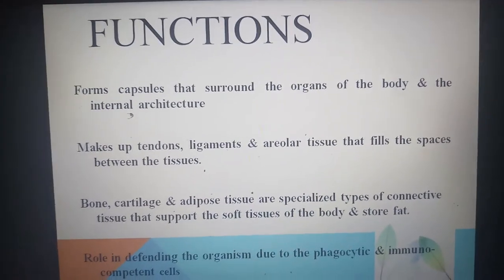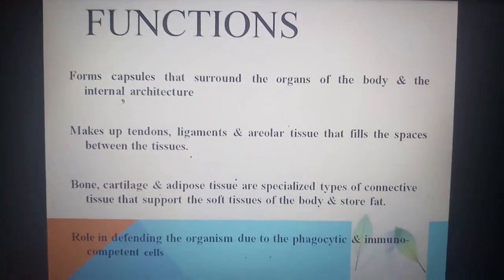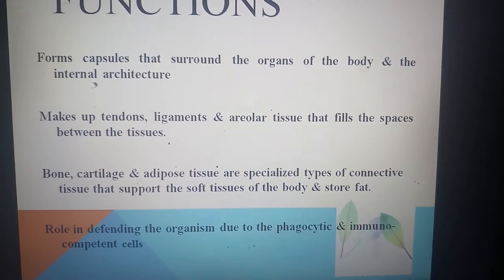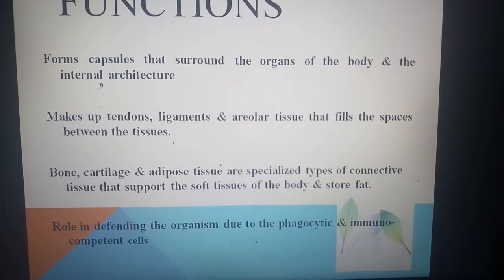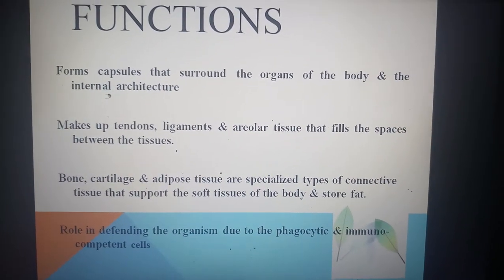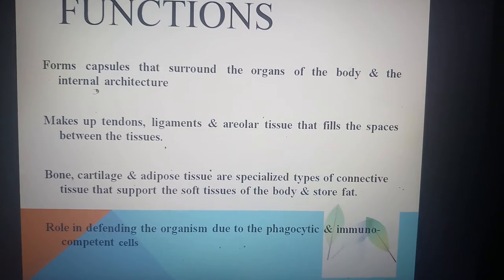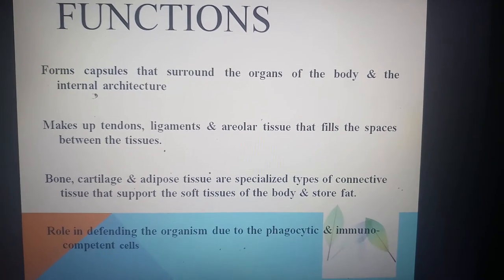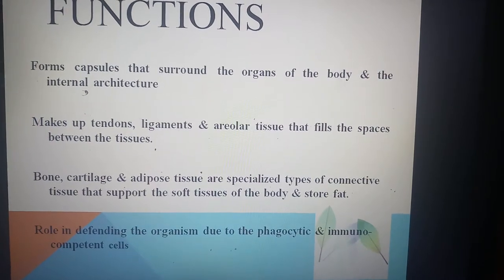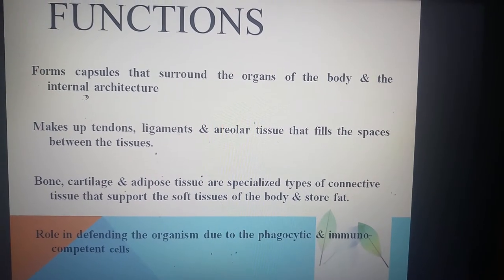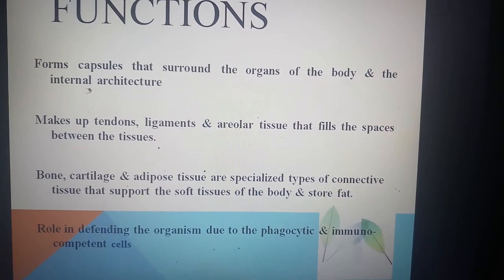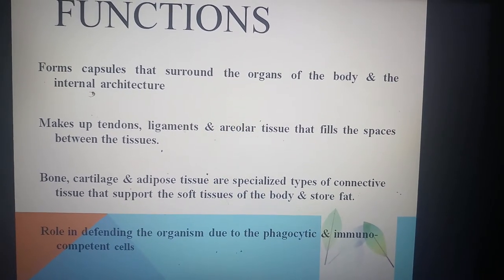Functions of connective tissue: it forms the capsules that surround the organs of the body and provides internal architecture. It makes up the tendons, ligaments, and areolar tissue that fills the spaces between tissues. Bone, cartilage, and adipose tissue are specialized types of connective tissue that support the soft tissue of the body and store fat.